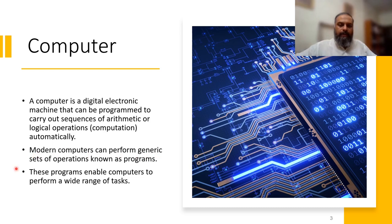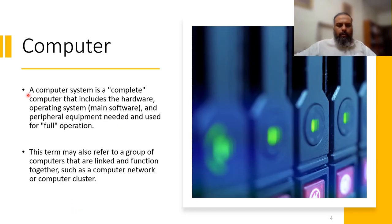Modern computers can perform generic sets of operations known as programs, which enable computers to perform a wide range of tasks. A computer system is a complete computer that includes the hardware, operating system, and peripheral equipment. By system we mean a complete system which includes hardware, main software or operating system, and peripheral equipment — all required to perform full operation. The operating system is the main computer software.